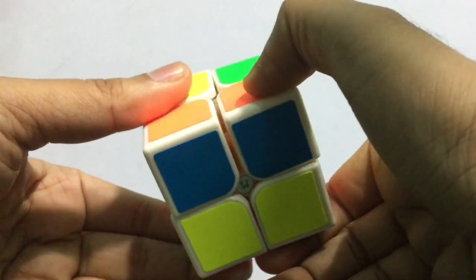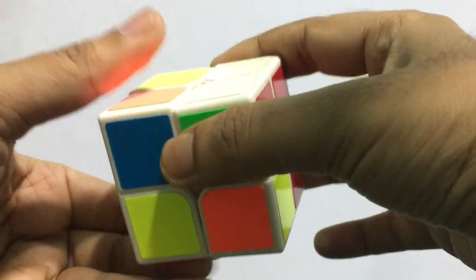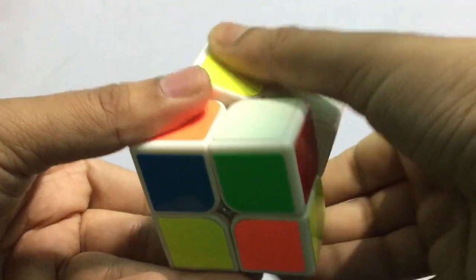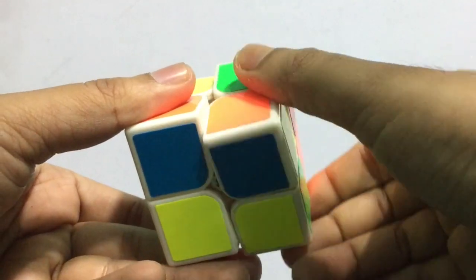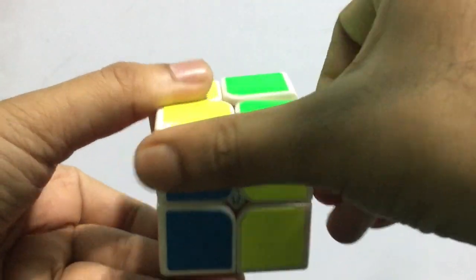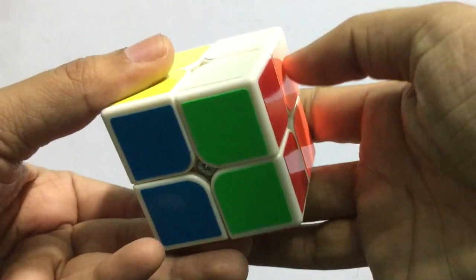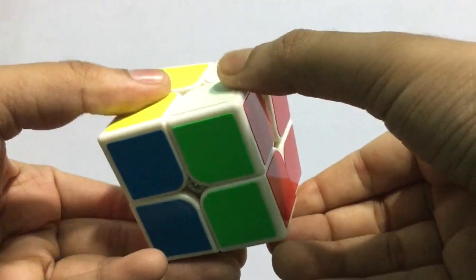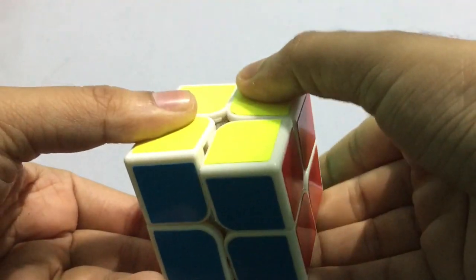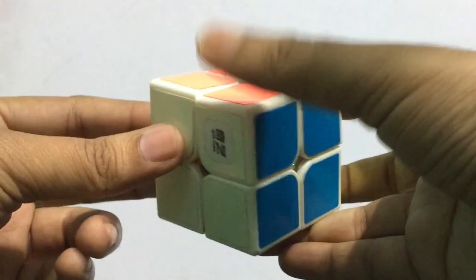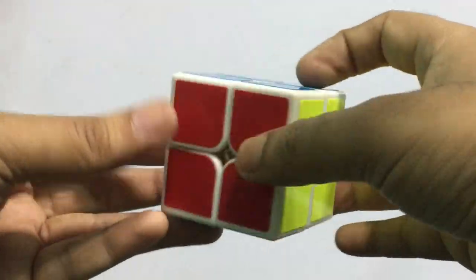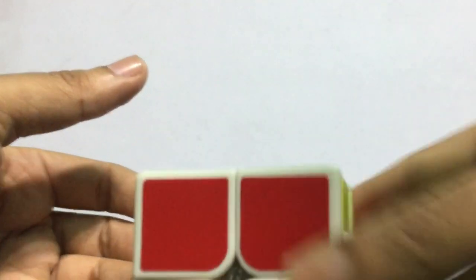Right, front, right, back twice. Again, right, back twice, and right twice. You can check it out, it's already solved. This is the way you can solve the Rubik's Cube. Thank you.